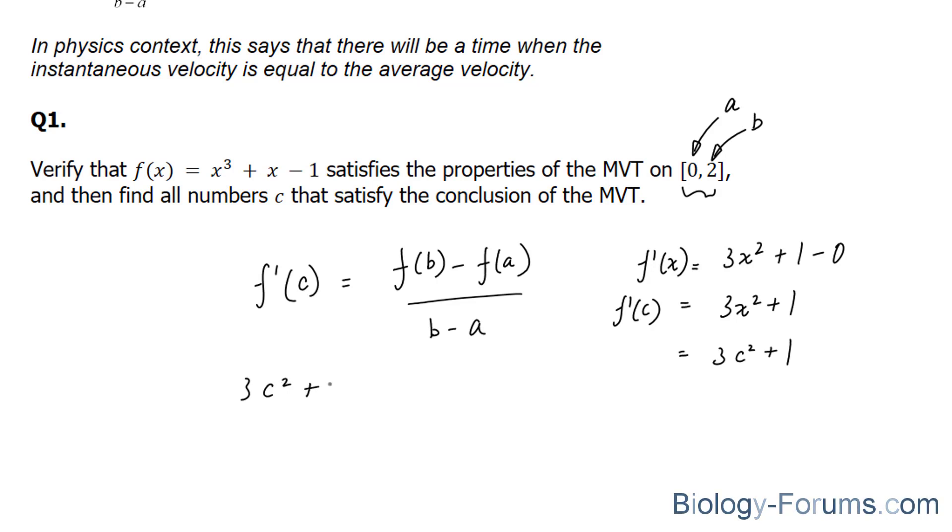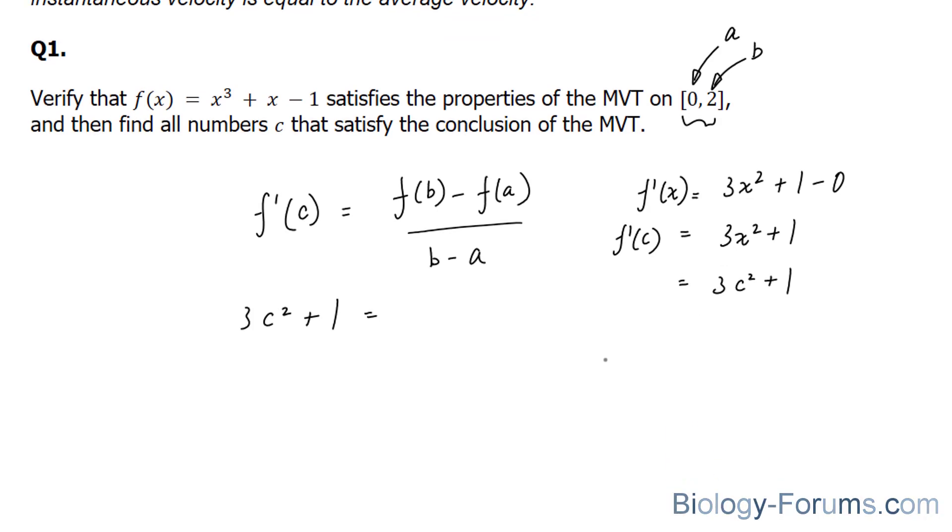3c² + 1 equals f(b). Let's find out what that is. f(b) = 2³, which is 8 + 2 - 1. 8 + 2 - 1 equals 9. Wonderful.